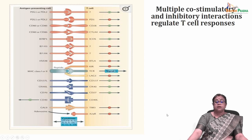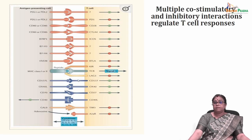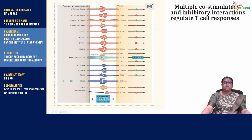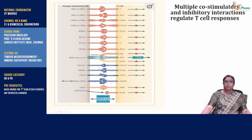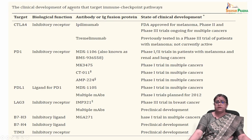Let me also tell you that PD-1 and PD-L1 are not the only co-stimulatory molecules which are present. There are multiple co-stimulatory and inhibitory reactions that regulate T cell responses. These are all the different co-stimulatory molecules present in the antigen presenting cells, and these are all the molecules present on the T cells. One can modulate their activity with different combinations of antibodies, and if we can do that, it will enhance the immunotherapy component in treatment of tumor. There are several agents in development that can target the immune checkpoint pathways and many of them are FDA approved now.